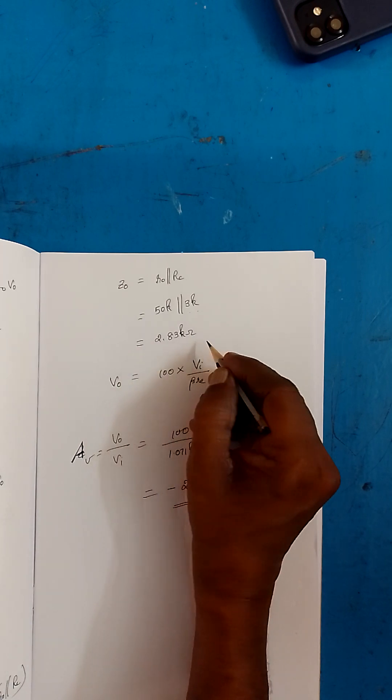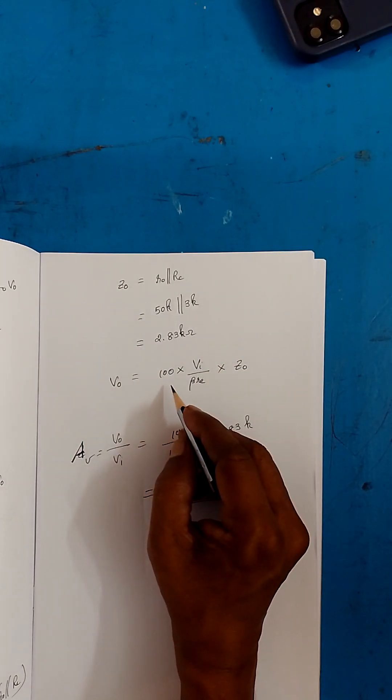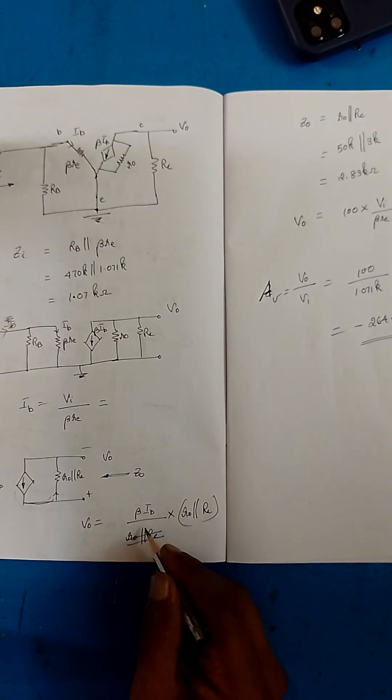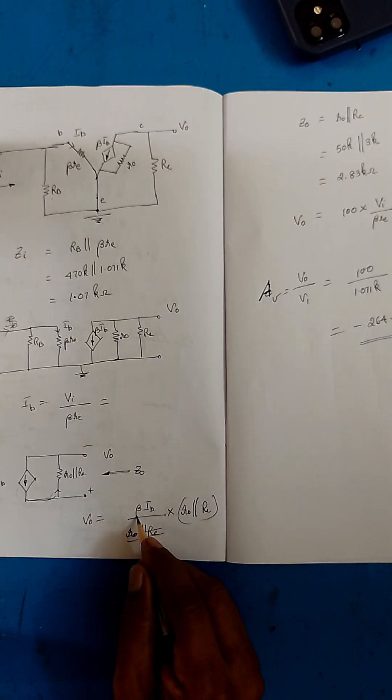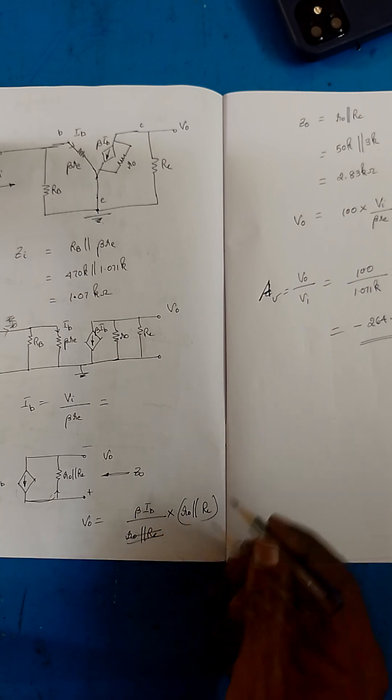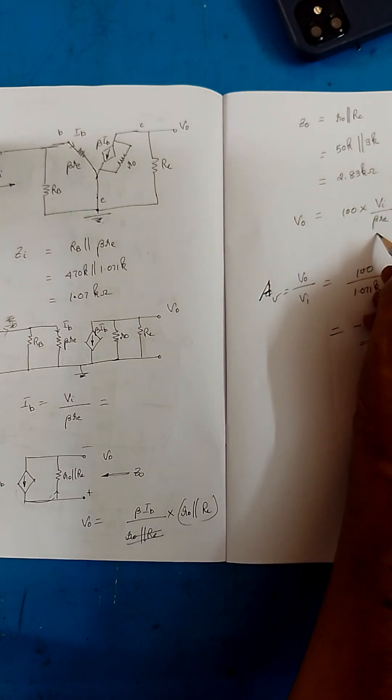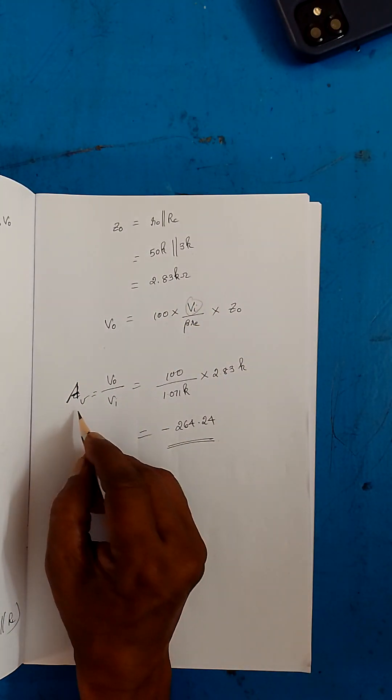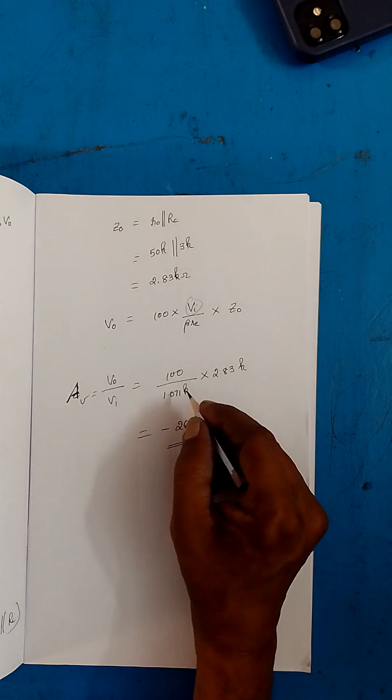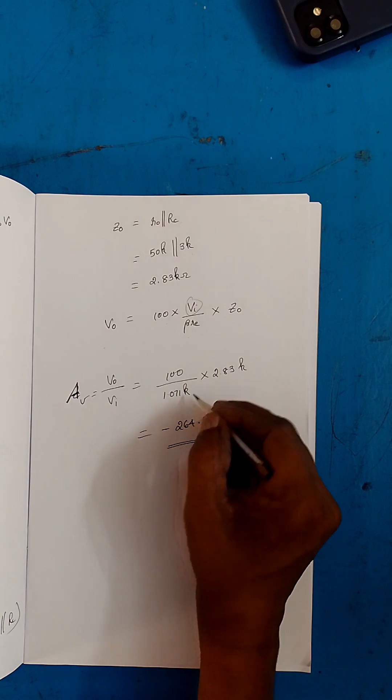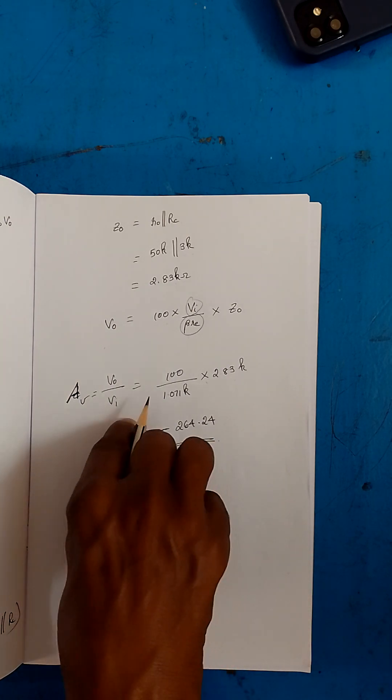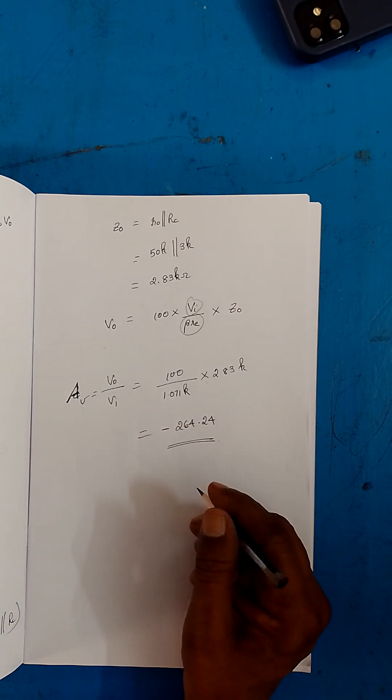Now V out is equal to 100, that is beta. Here I told you V out is beta IB. Beta is given in the question as 100. IB is V in by beta re. Then Z0. Now you move this V0 to the other side, so voltage gain is equal to V out by V in, which is equal to 100 by 1.071k, this beta re value, multiplied by Z0. This value on simplification you will be getting 264.24. This minus sign indicates with respect to ground, the output is negative. Thank you.